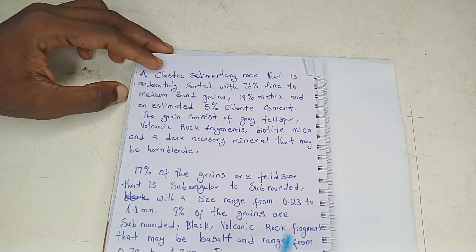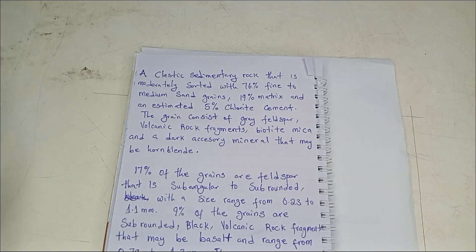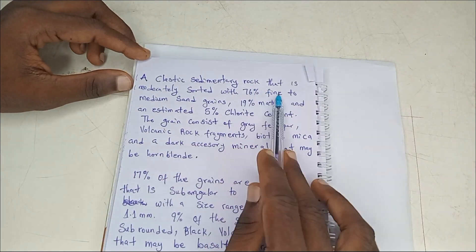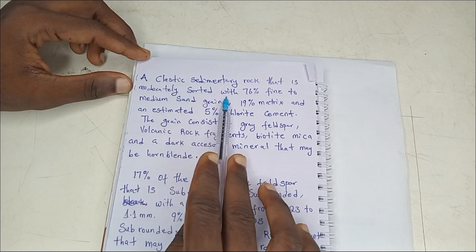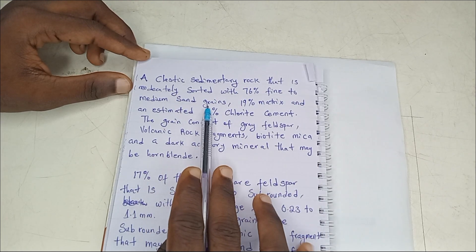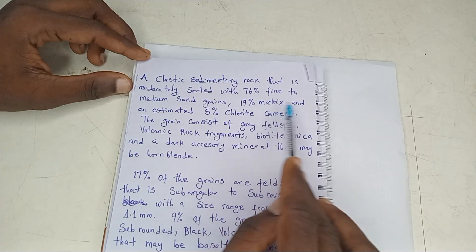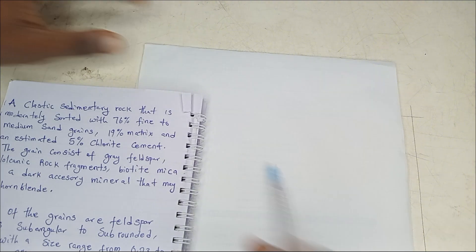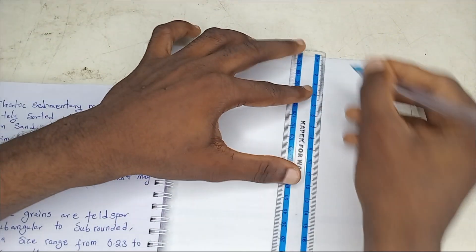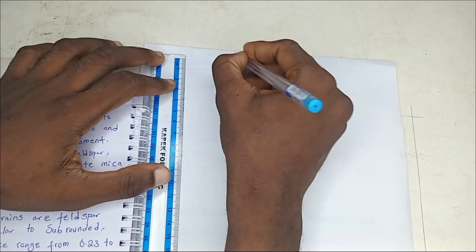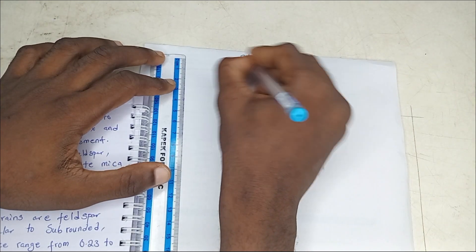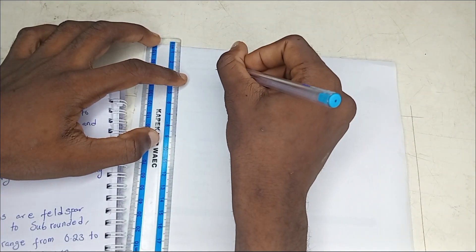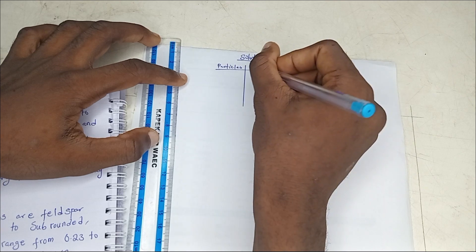Looking at this question: a clastic sedimentary rock that is moderately sorted with 76% fine to medium sand grains, 19% matrix, and an estimated 5% chlorite cement. You're going to start the solution by listing the different particles and their percentages.